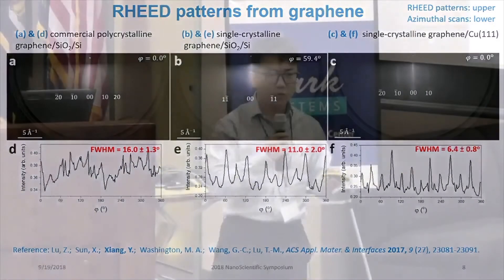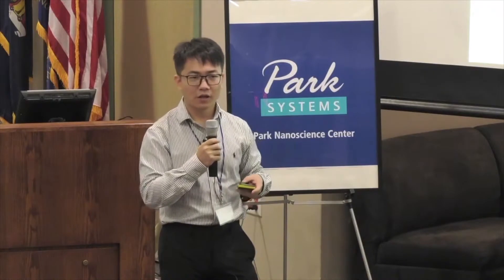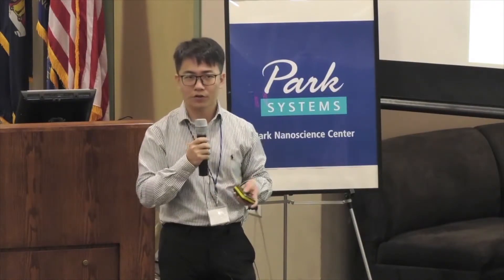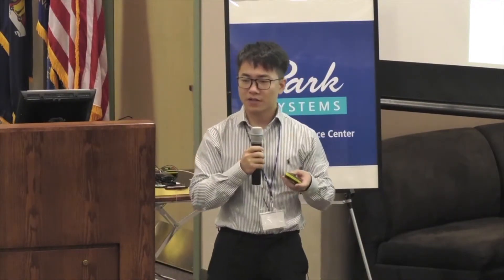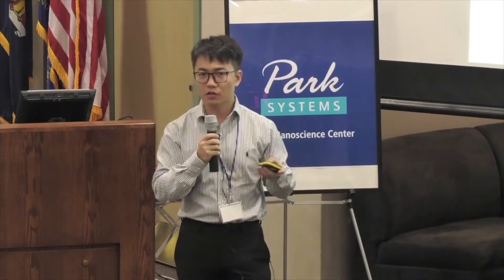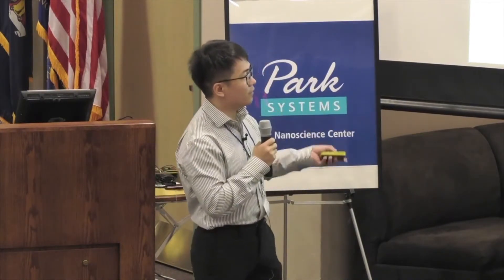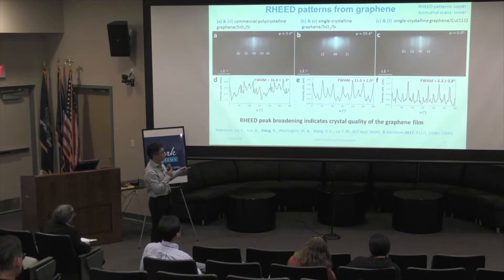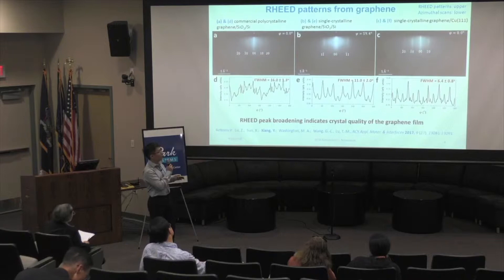The full width at half maximum of the peaks in the azimuthal scan is closely related to the quality of the film, where a smaller full width at half maximum usually indicates that the quality of the film is better. From those three results, we can infer that the quality of the single crystalline graphene as-grown on copper is the best.